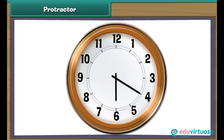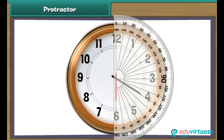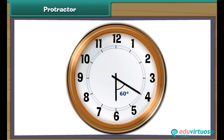This clock shows 20 past 6 — the long hand is on 4 and the short hand is on 6. Place the protractor on the short hand and read the inner marking on which the long hand rests. It is 60 degrees. Therefore, the time 20 past 6 makes an acute angle.